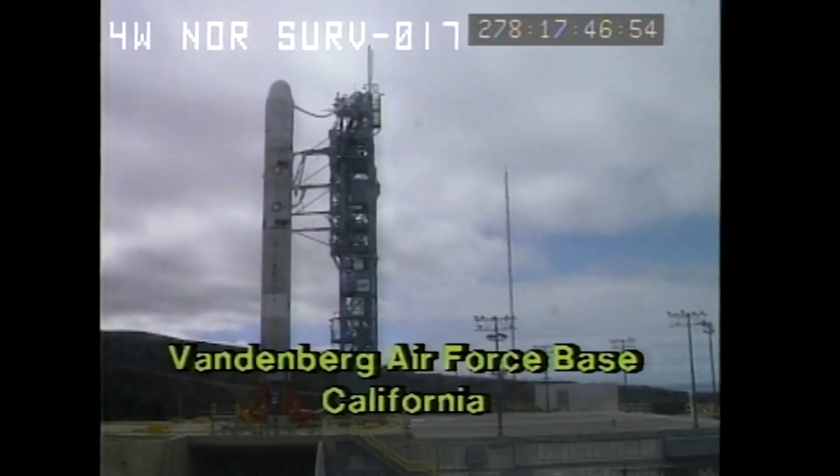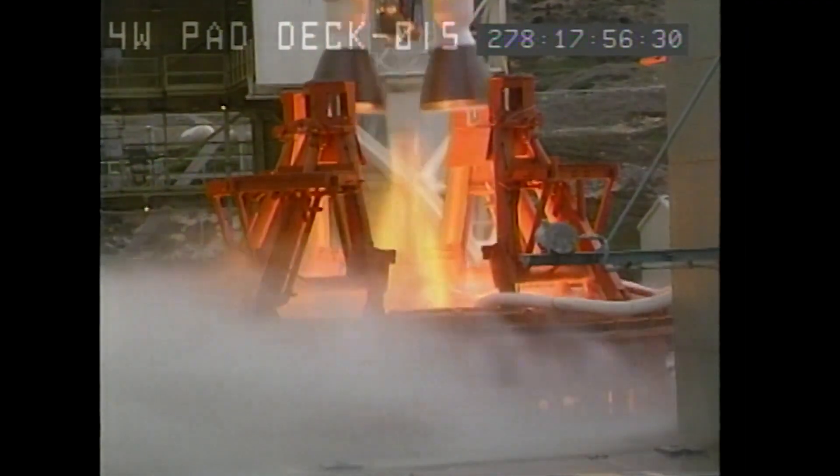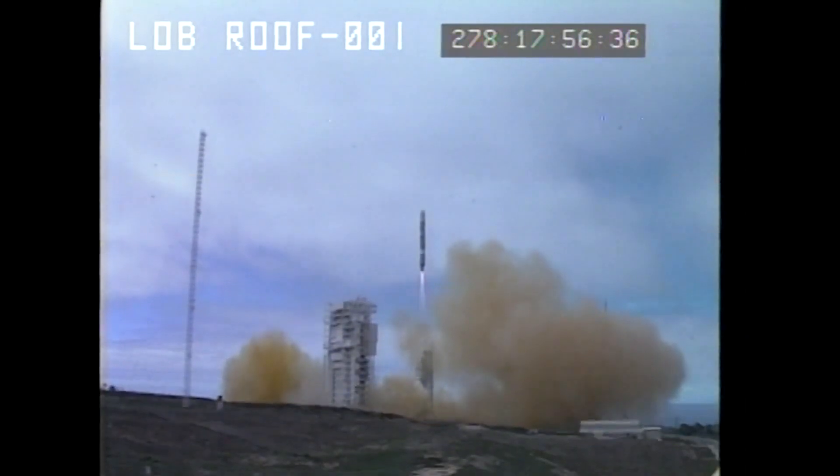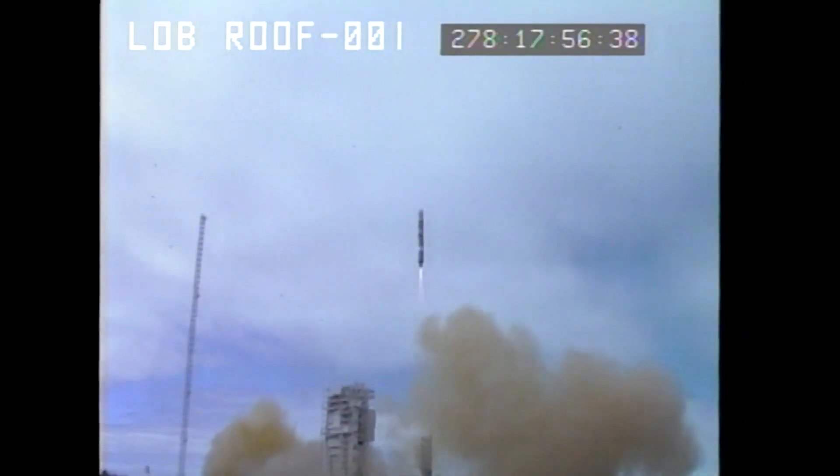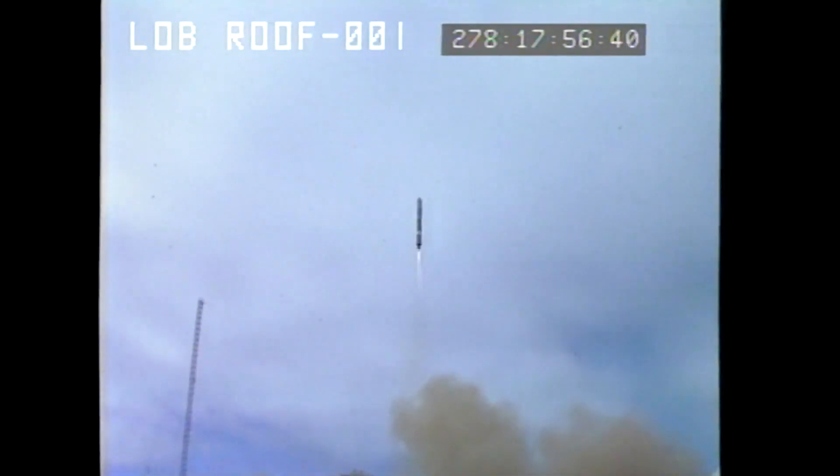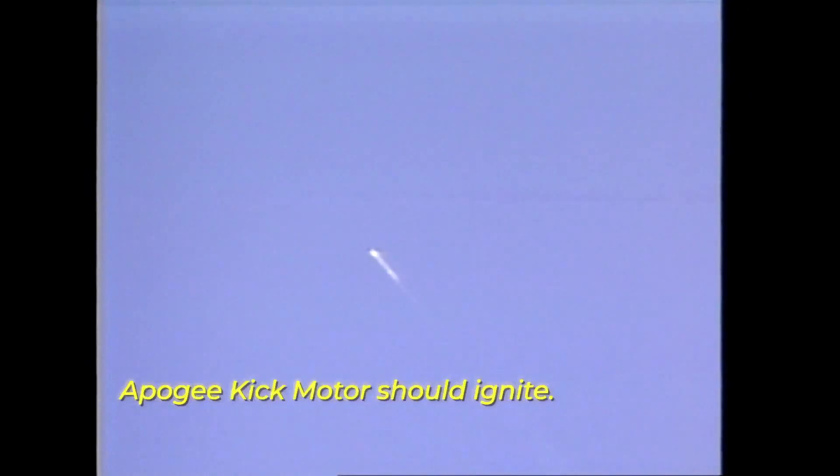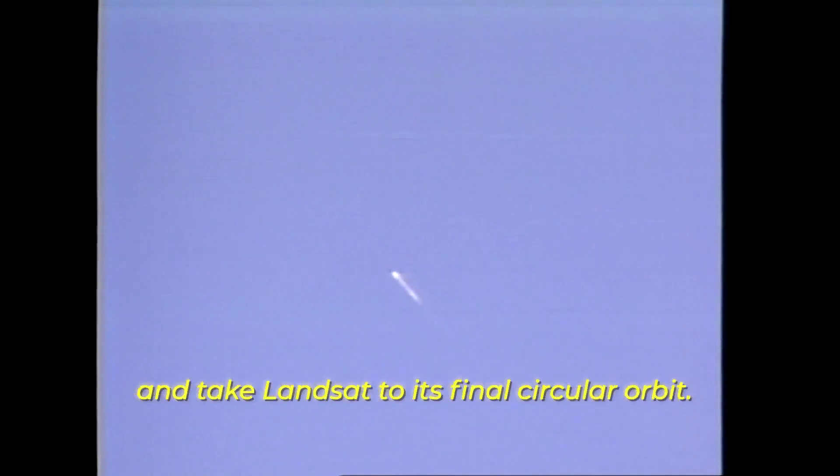Fire engine, liftoff. Time, 1756. We have liftoff. Landsat 6 launched on October 5, 1993. Apogee kick motor should ignite right now and take Landsat to its final circular orbit. But it never made it to orbit.